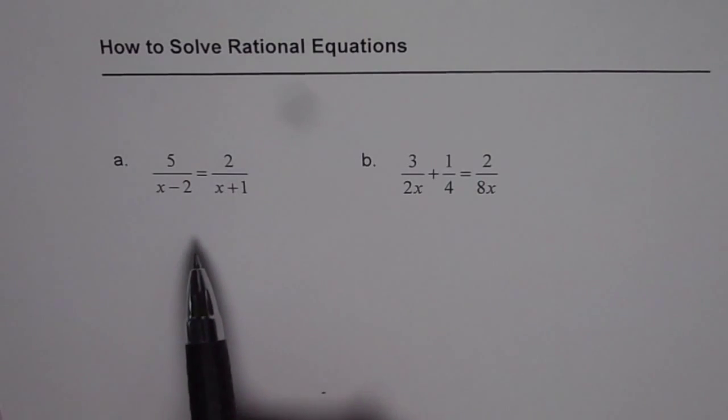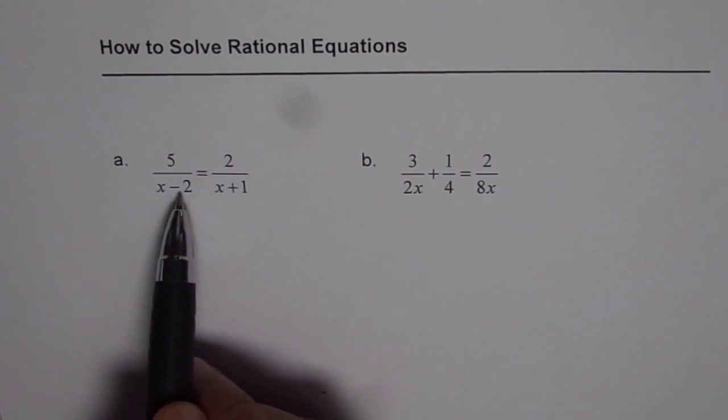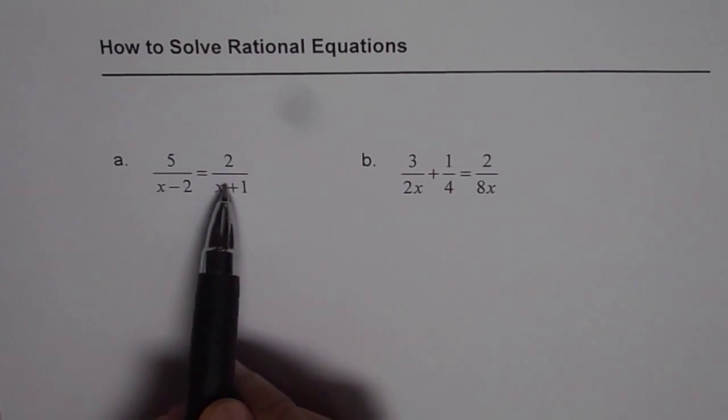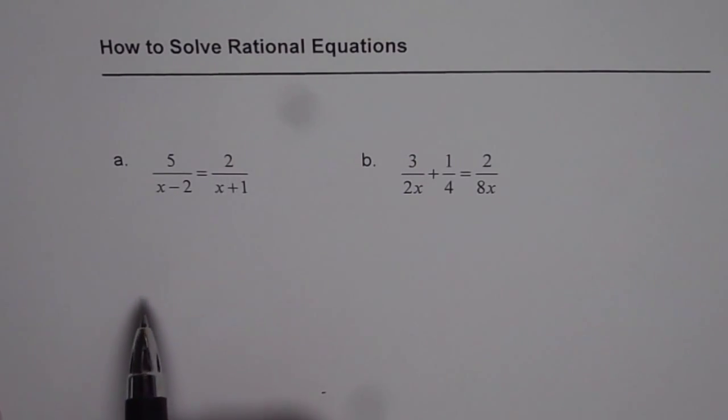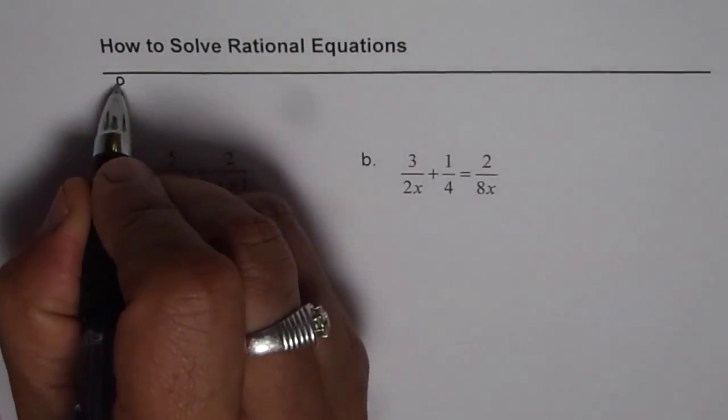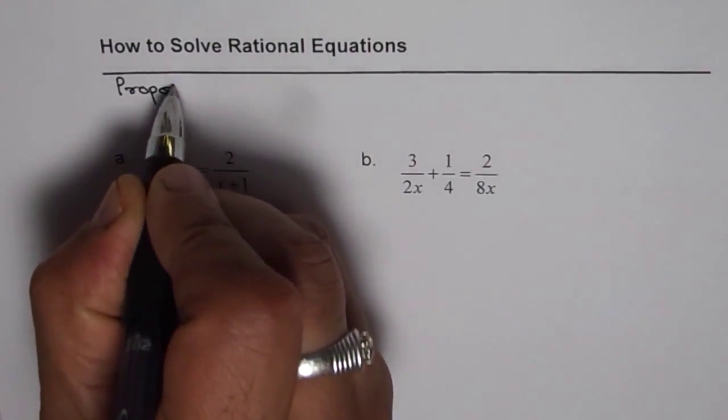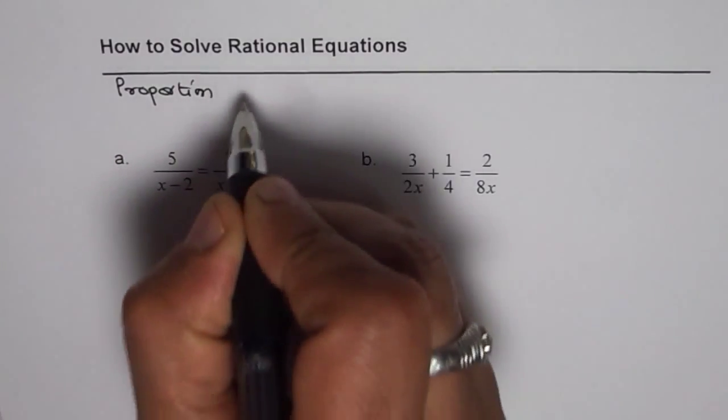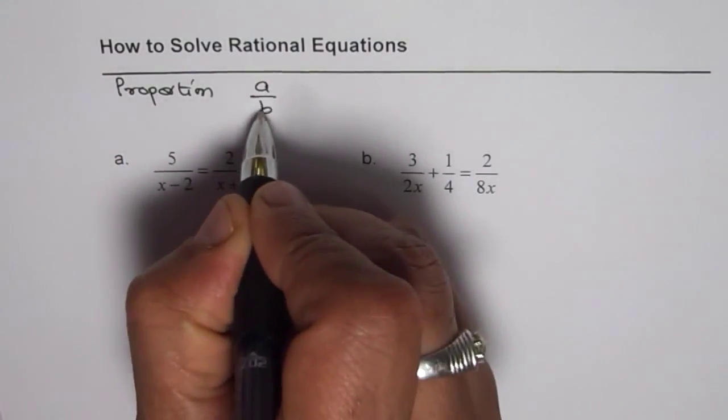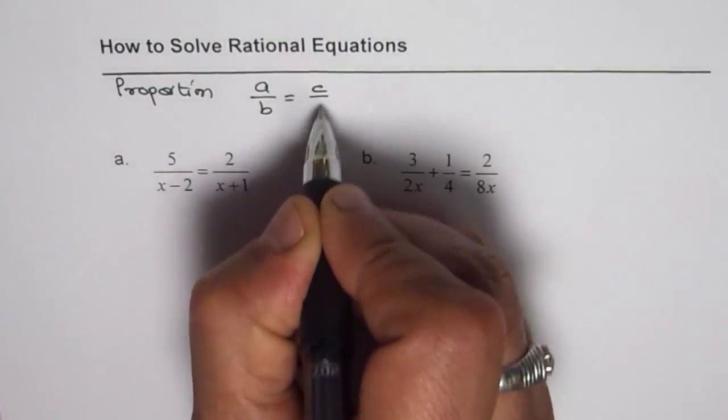You will find two kinds of rational equations. One which will be kind of a proportion which is written here, something equals to something in these ratios. Now this is kind of proportion, which is A over B equals to C over D.